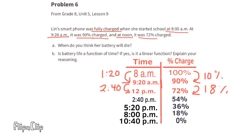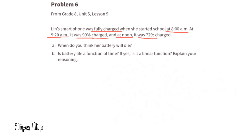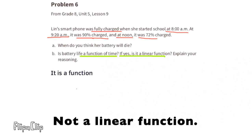Part B: Is battery life a function of time? If yes, is it a linear function? Yes, the battery life is a function of time. However, it is not a linear function. It took 80 minutes for her to lose the first 10% of the battery, and then 160 minutes to lose another 18%. If the function were linear, it would lose exactly twice as much in 160 minutes as it did in 80 minutes. The example created was fairly linear, but not quite linear.